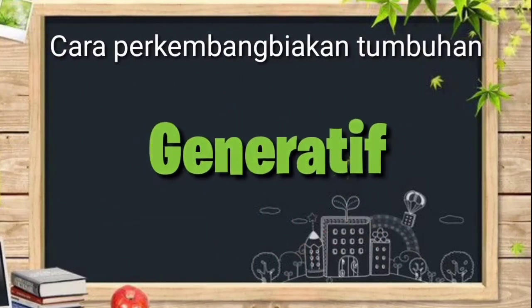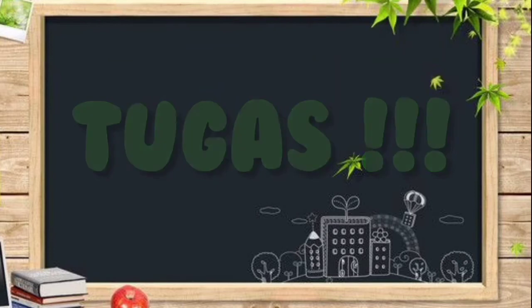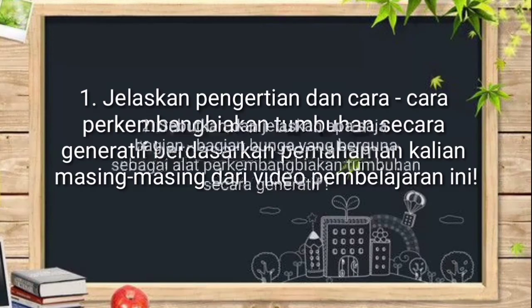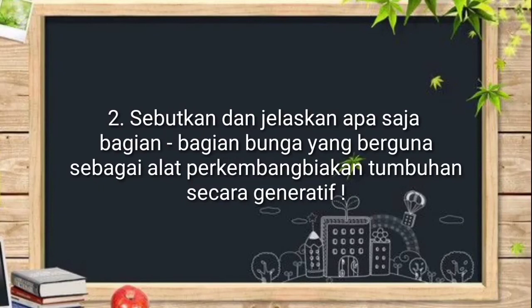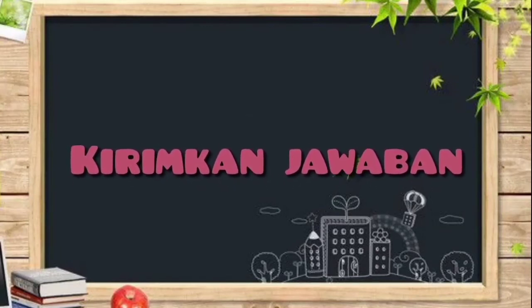Sampai di sini sudah dapat dipahami kan cara perkembangbiakan tumbuhan secara generatif. Kalau masih belum memahami, kalian boleh memutar kembali video ini atau bertanya langsung kepada ibu melalui WhatsApp pribadi ibu. Sebelum video ini berakhir, kalian punya tugas. Pertama, coba kalian jelaskan pengertian dan cara-cara perkembangbiakan tumbuhan secara generatif berdasarkan pemahaman kalian masing-masing dari video pembelajaran ini. Kedua, coba kalian sebutkan dan jelaskan apa saja bagian-bagian bunga yang berguna sebagai alat perkembangbiakan tumbuhan secara generatif. Jika sudah selesai menjawab, kalian boleh langsung kirimkan jawaban kalian secara online kepada guru tematik kalian masing-masing.